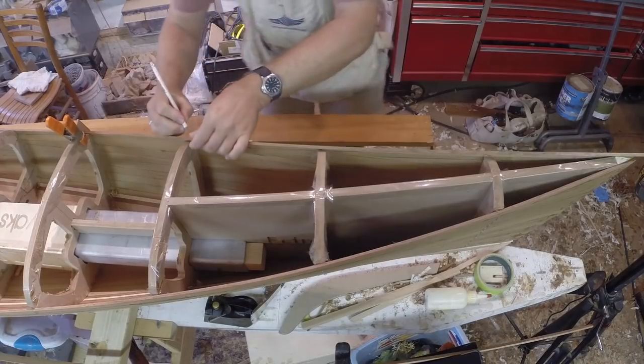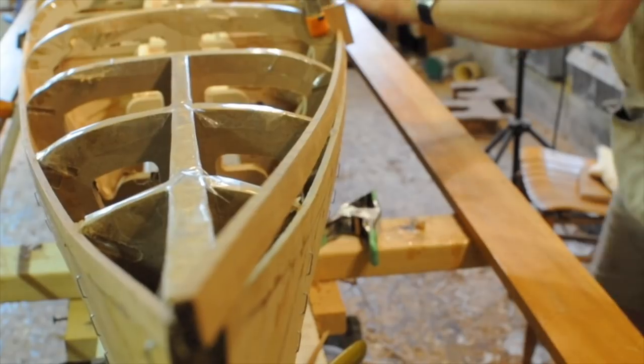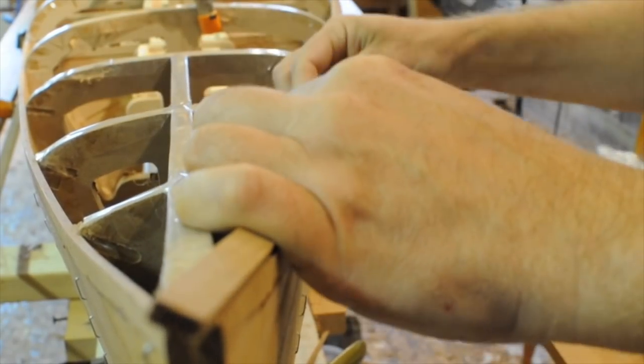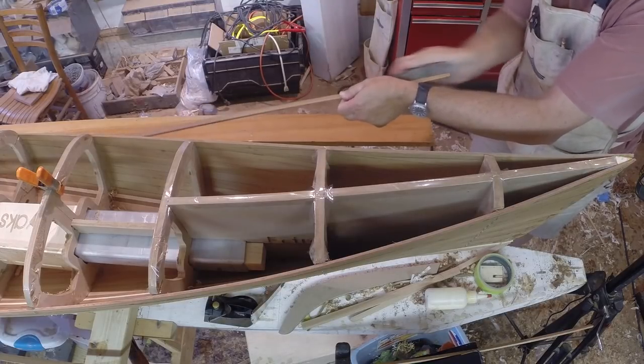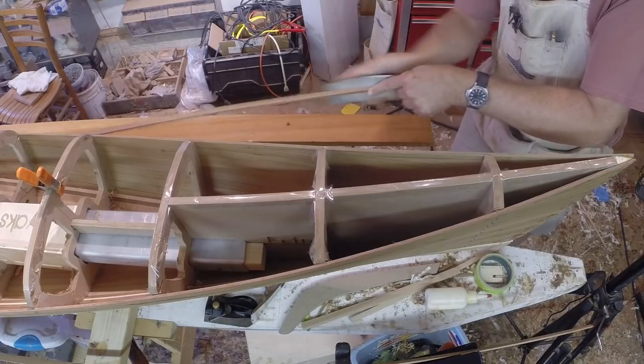As I did on the hull, I write the form number where the strip crosses each form. This is just a quick guide to keep track of where I'm working. I start the bevel by looking at how wide a gap I have. I then hold my plane so I see a similarly sized gap. Holding that angle constant, I keep planing until the gap disappears.